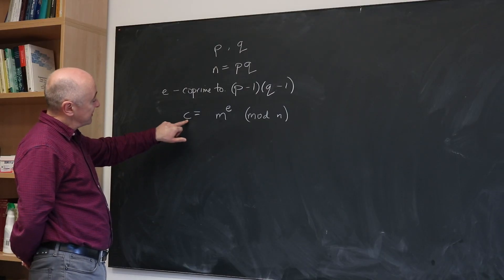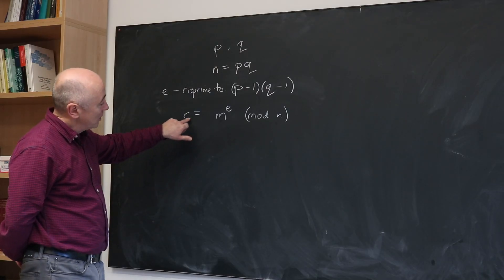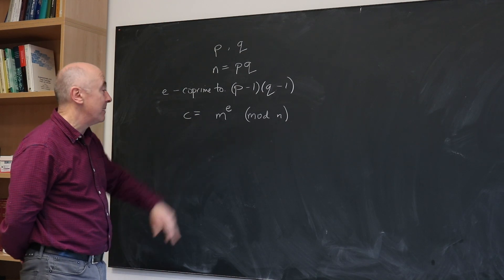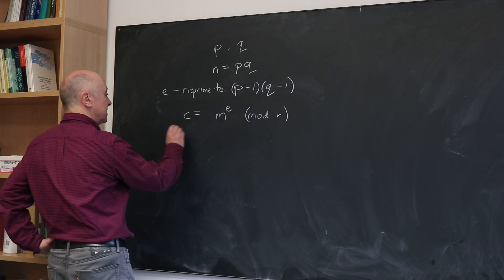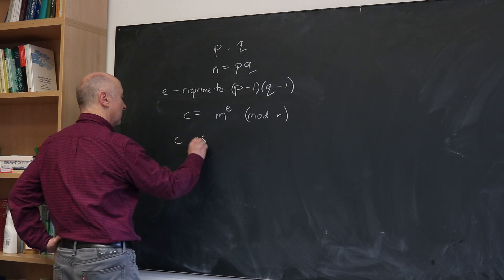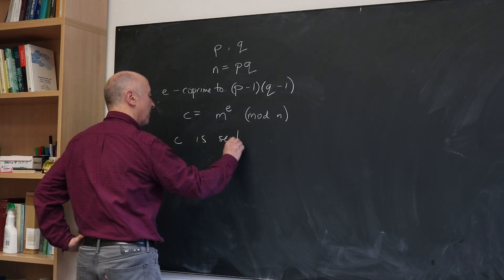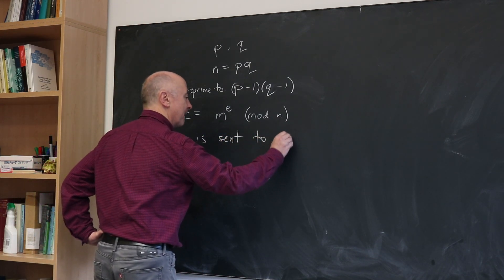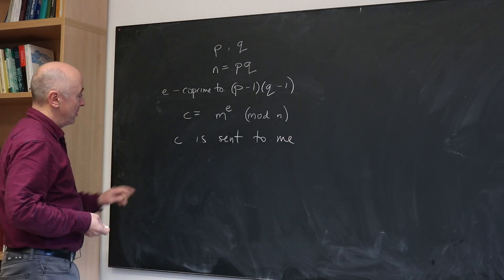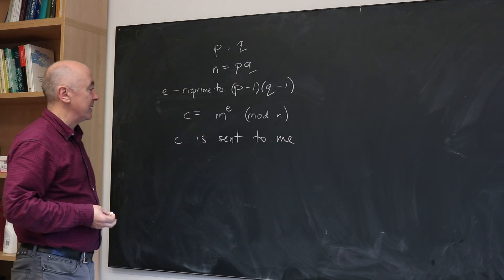So how, when I've received C, do I then reconstruct the number M? This is what's sent.